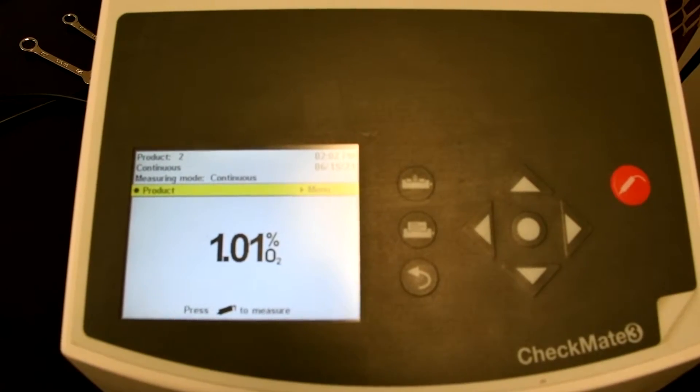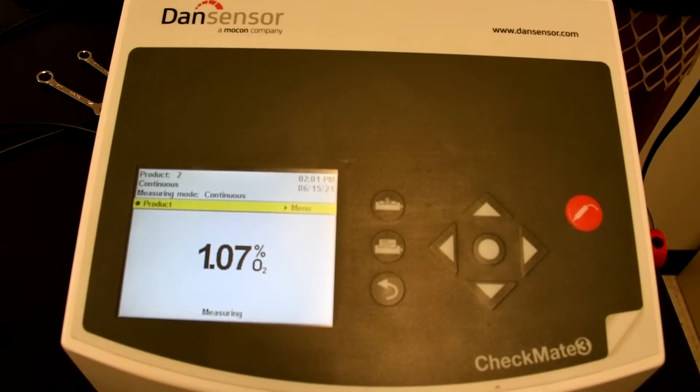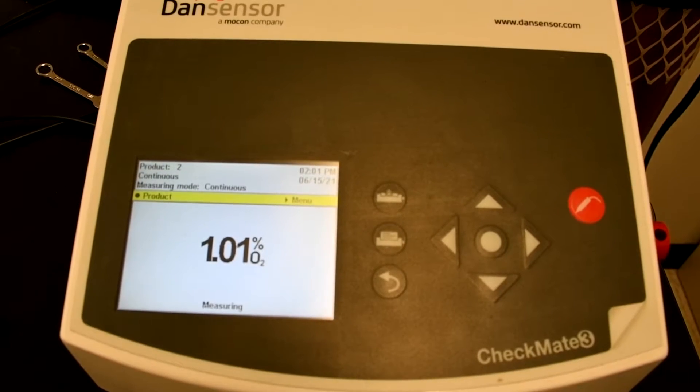Set your Checkmate 3 for the continuous mode. Take a measurement with your instrument. When the reading on your instrument stabilizes, press the Stop Measurement button.